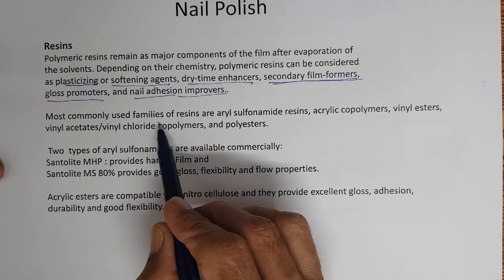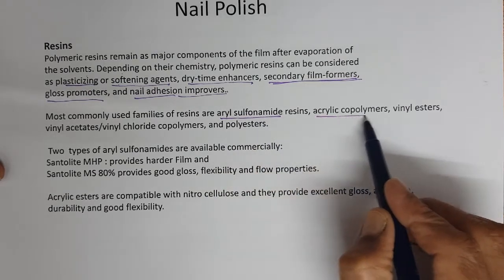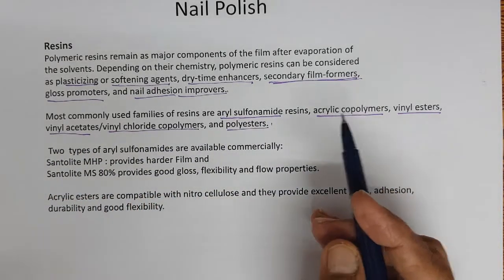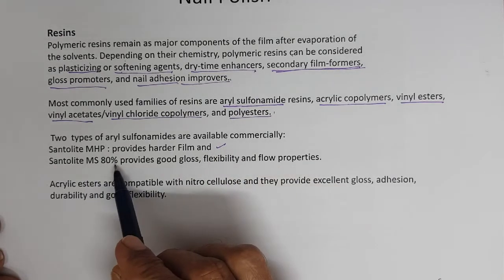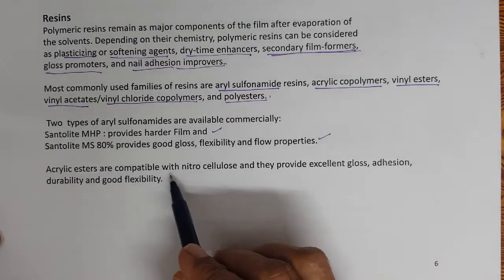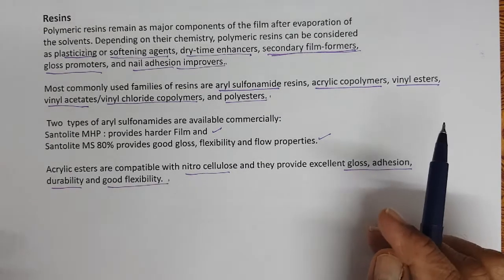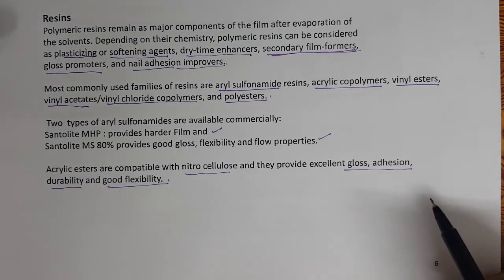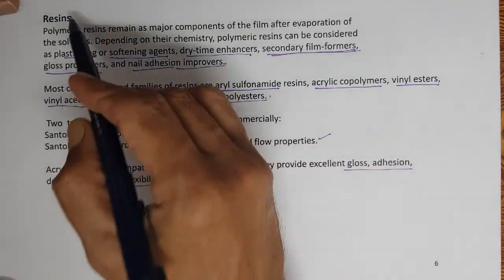Most commonly used resins are from the family of aryl sulfonamides, acrylic copolymers, vinyl esters, vinyl acetate, vinyl chloride copolymers, and polyesters. Two types of sulfonamides are available: Santolite MHP, which provides a harder film, and MS 80%, which provides good gloss, flexibility, and flow properties. Acrylic esters are compatible with nitrocellulose and provide excellent gloss, adhesion, durability, and good flexibility.